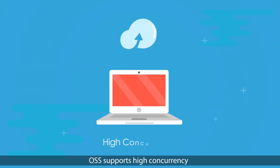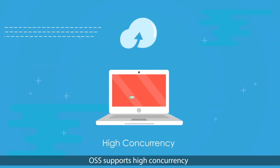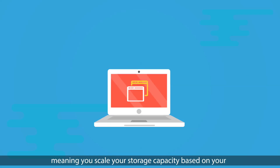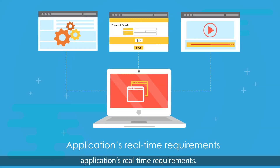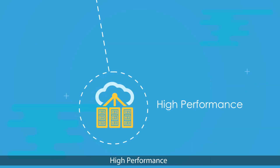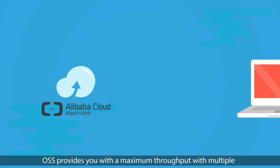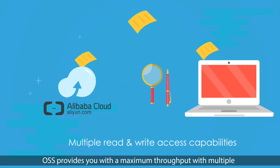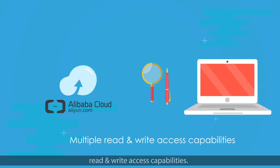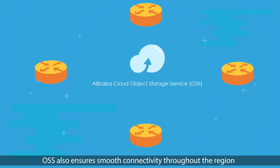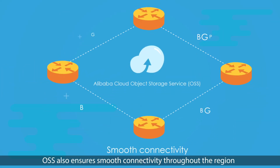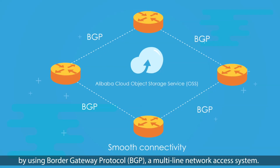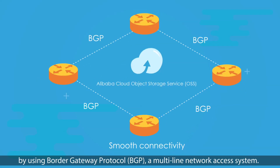Scalability: OSS supports high concurrency, meaning you can scale your storage capacity based on your application's real-time requirements. High-performance: OSS provides maximum throughput with multiple read and write access capabilities, and ensures smooth connectivity throughout the region by using Border Gateway Protocol, a multi-line network access system.